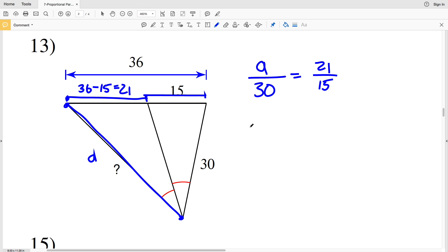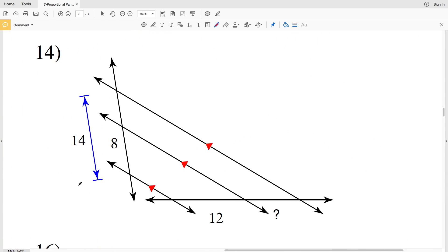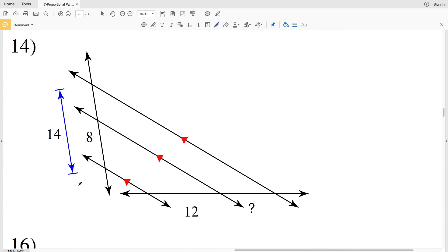Now we'll cross multiply. a times 15 equals 30 times 21. So 15a equals 30 times 21, which is 630. And when I divide by 15, I'll get that a is equal to 42, since 630 divided by 15 is 42. So this missing length is 42.